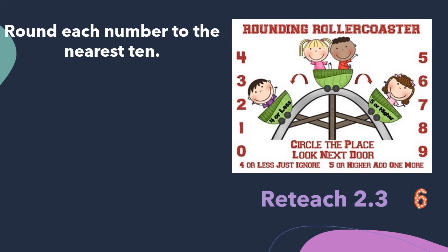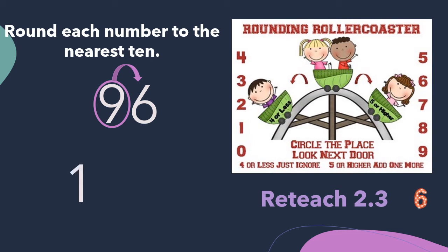Let's take a look at number six, 96. Circle the place — we're rounding to the nearest 10, so I'm going to circle the tens place. Look next door — we're going to look at the digit to the right. Five or higher, add one more. So that boss digit tells the nine to add one more. But what is one more than nine? It's 10. Now I can't write 10 in the tens place — I have to put that one in the hundreds place and the zero in the tens place. And then anything to the right of that digit is going to become a zero. So 96 rounded to the nearest 10 is 100, because 96 is closer to 100 than it is to 90.